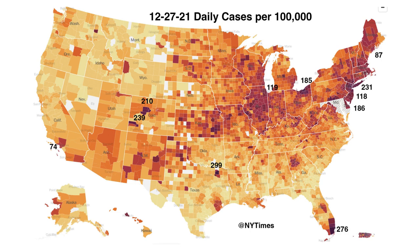New York City, where over 70% of individuals are vaccinated, is experiencing a surge with 231 daily cases per 100,000. Miami, which also achieved a high vaccination rate, is now experiencing 276 cases per 100,000. Washington D.C. has 186 per 100,000, and Chicago 119 per 100,000. The highest case rate is seen in a small county in Texas — Hopkins County — with 299 per 100,000 per day.